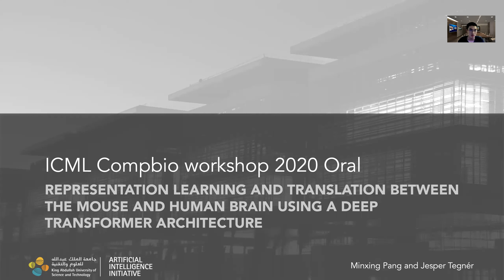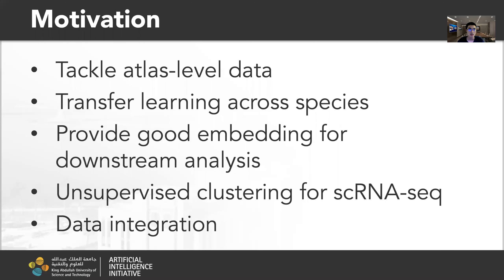The title is 'Representational Learning and Translation Between the Mouse and Human Brain Using Deep Transformer Architecture.' Here is the motivation: the purpose is to tackle the adverse level of data scarcity and utilize transfer learning across species to transfer information as prior knowledge. The model can also provide good embeddings for downstream analysis.